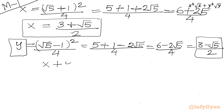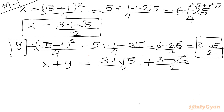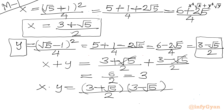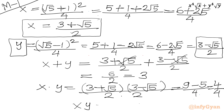Let us find x + y: (3 + √5)/2 + (3 - √5)/2 = 6/2 = 3. Now the product x · y: (3 + √5)(3 - √5) / (2 × 2) = (9 - 5) / 4 = 4/4 = 1. So x + y = 3 and xy = 1.